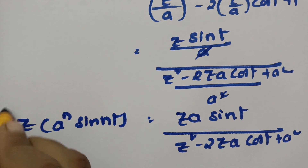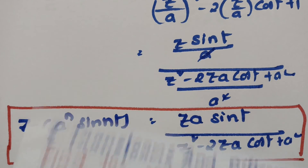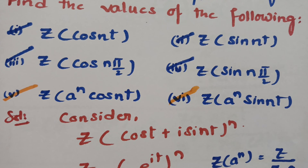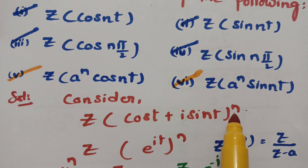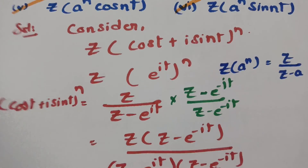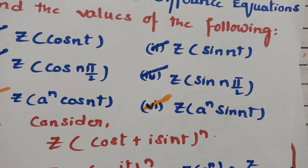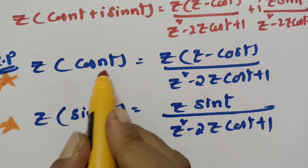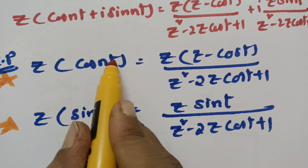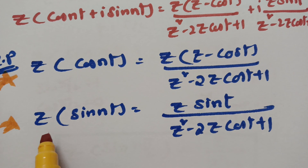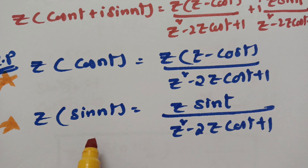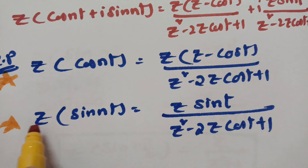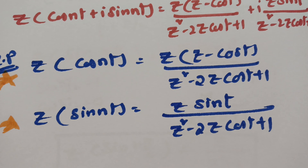Hope you all understand — this is a very simple concept. All six values are very important. To summarize: first we consider cos(θ) + i·sin(θ), multiply by the conjugate, then equate real and imaginary parts to get Z{cos(nt)} and Z{sin(nt)}. Substituting t = π/2 gives Z{cos(nπ/2)} and Z{sin(nπ/2)}. Using the damping rule gives Z{a^n·cos(nt)} and Z{a^n·sin(nt)}. Please practice — these are definite exam questions. If you like this, subscribe and share with your friends.